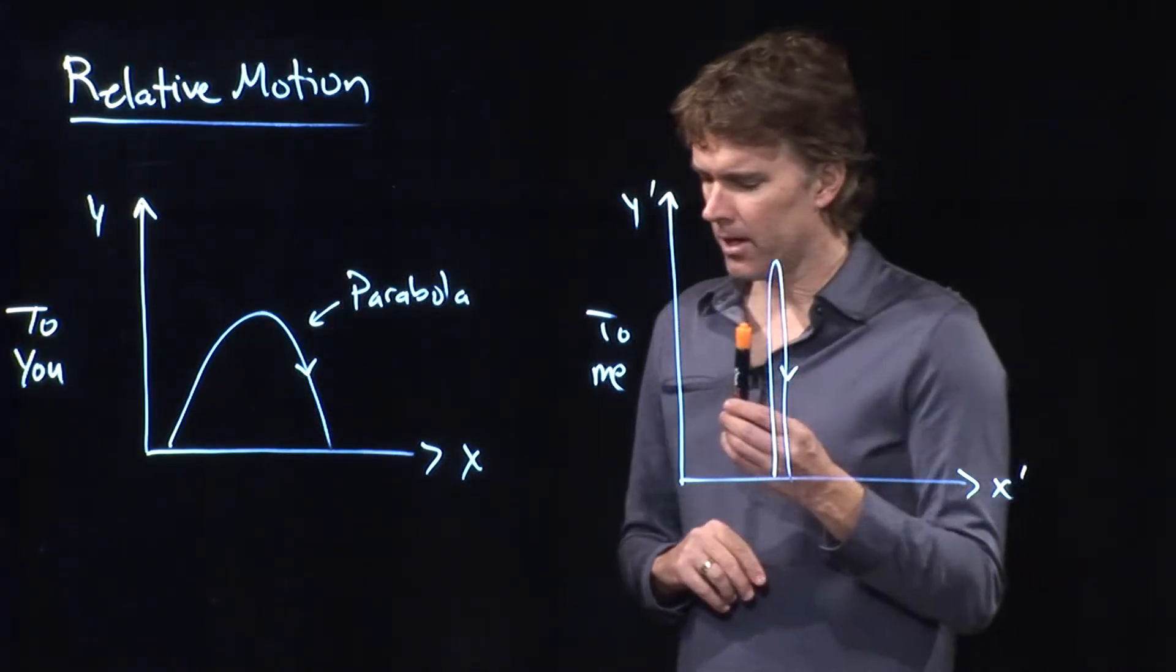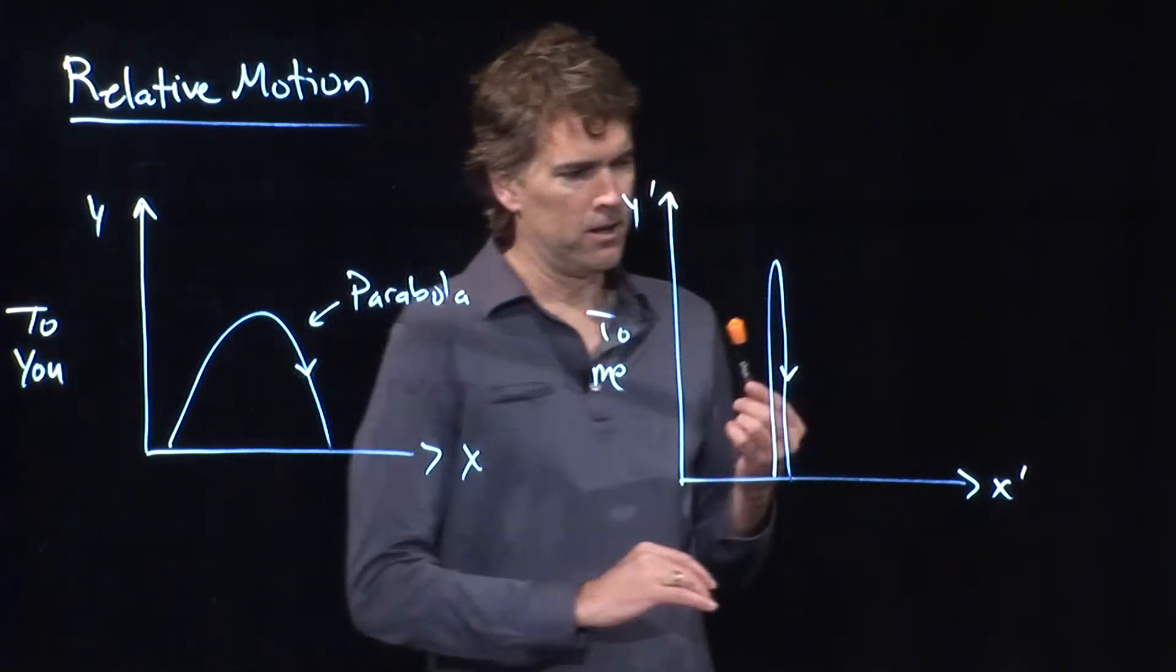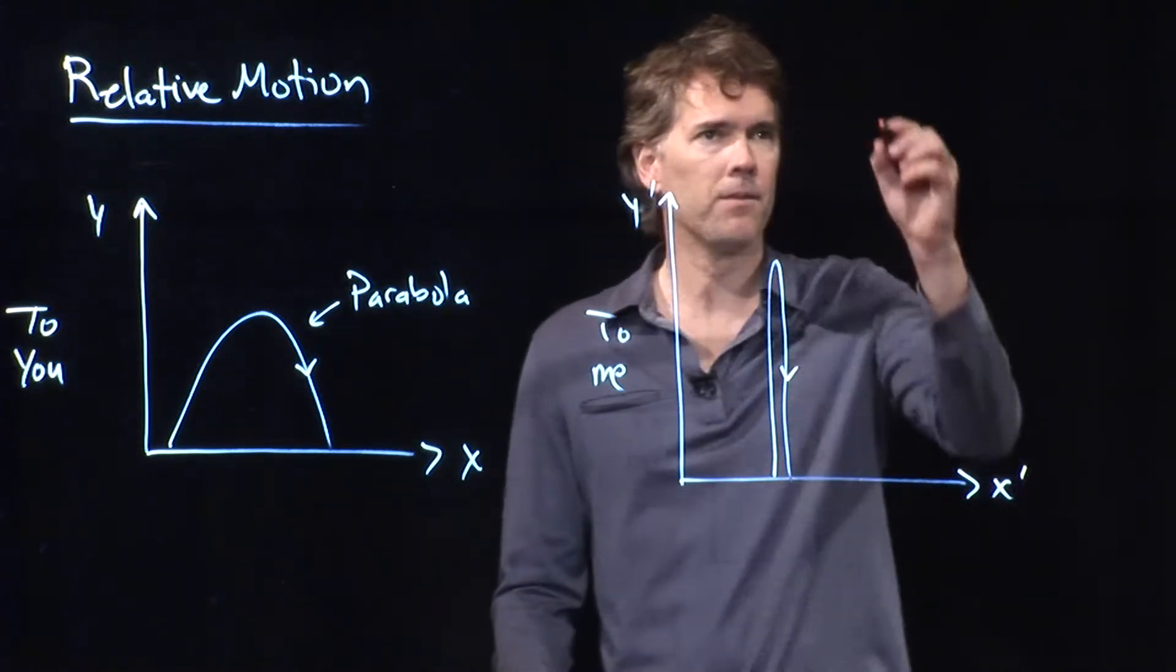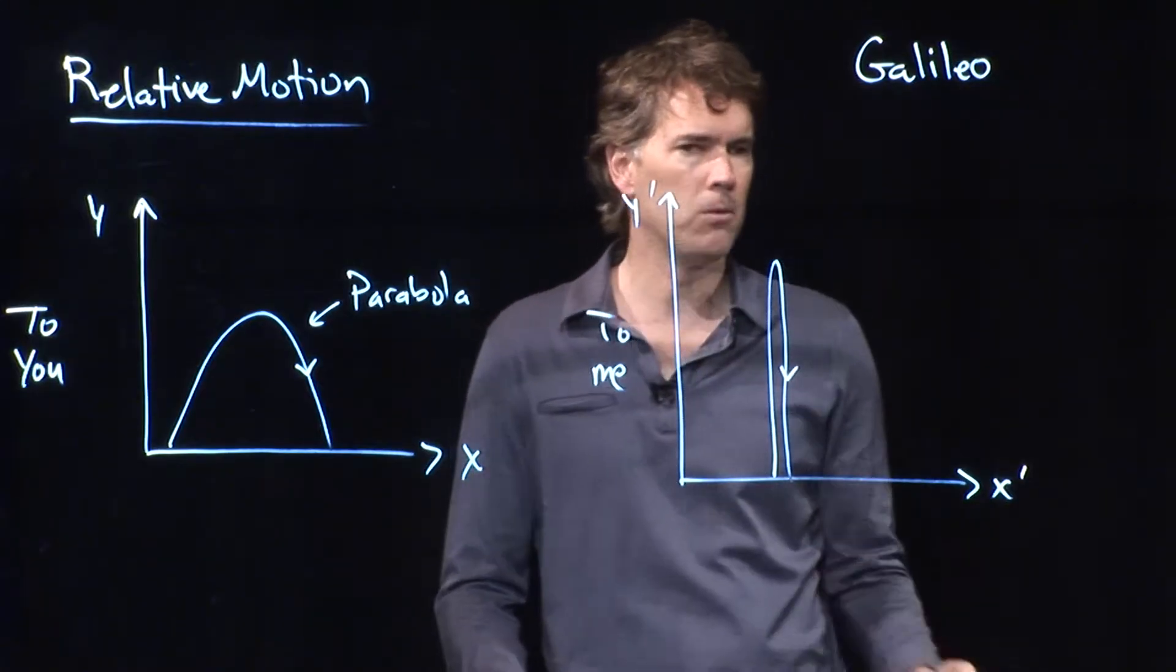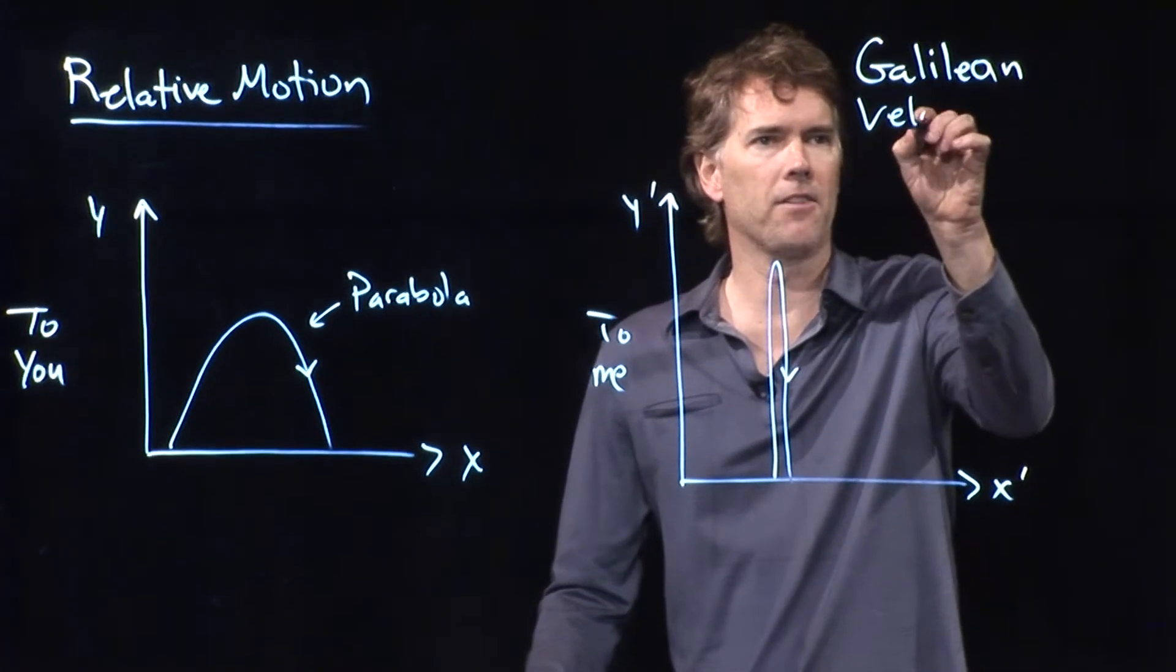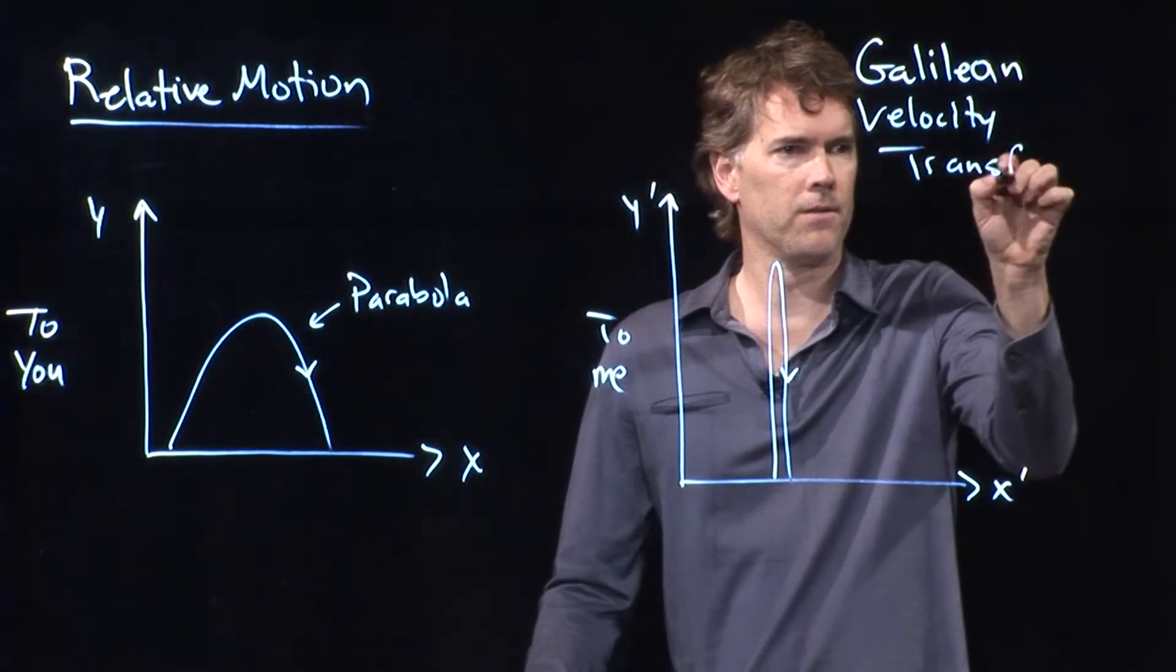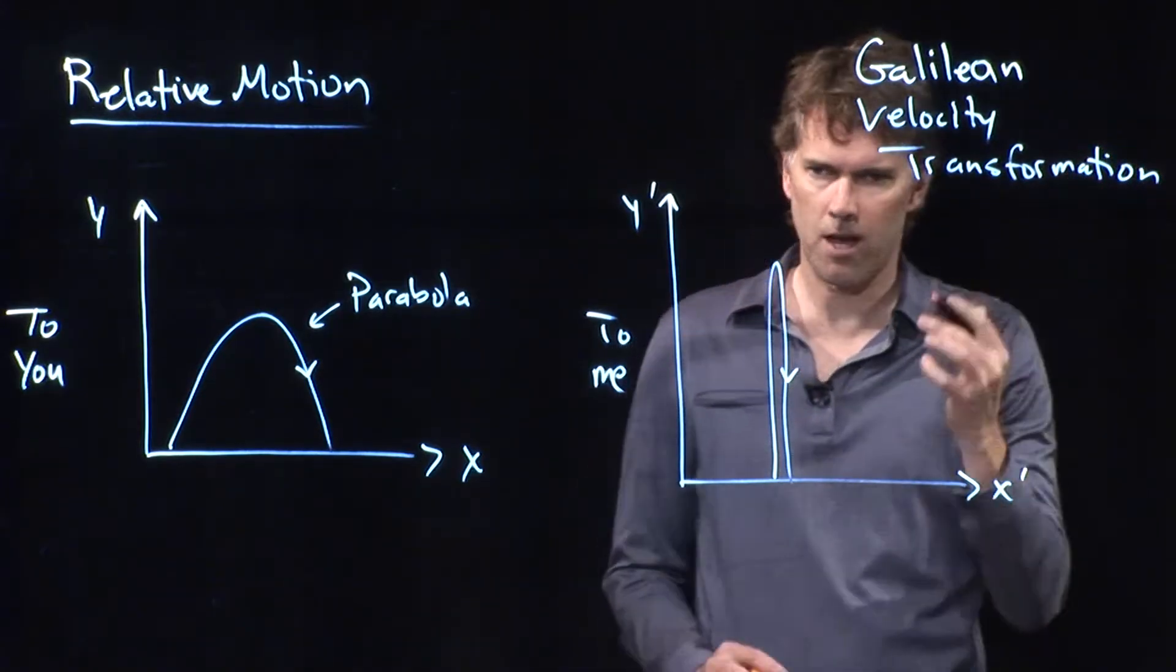And so, this idea of relative motion is really important. The person that came up with the idea originally was Galileo. And he wrote down something called the Galilean velocity transformation, and we're going to see how that works.